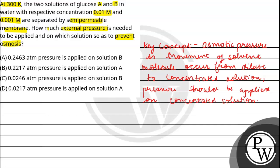That is 0.01 molar solution to prevent osmosis. We need to apply pressure on solution A. Now let's calculate how much pressure.